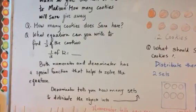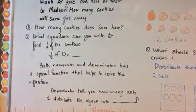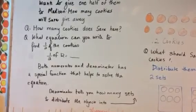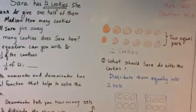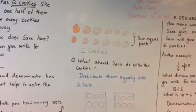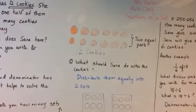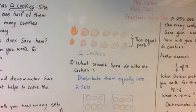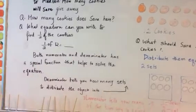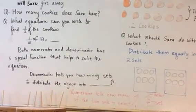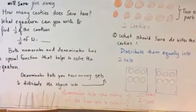So Sarah had 12 cookies and she has to distribute it into 2 sets. Look over here, I made 12 cookies and I put them in 2 sets. So denominator tells you how many sets, and then we go down.